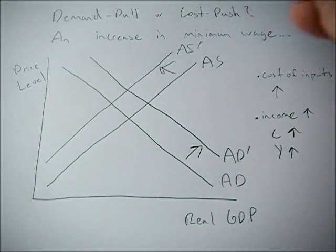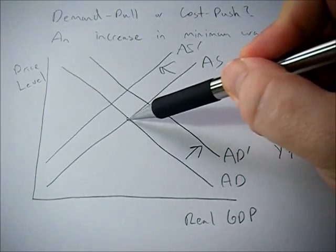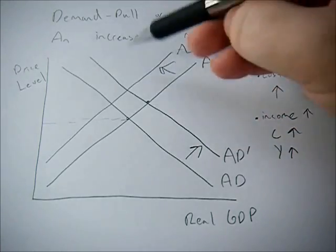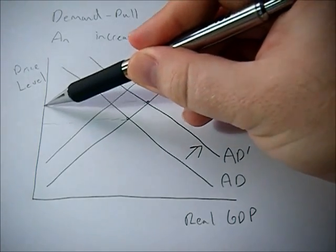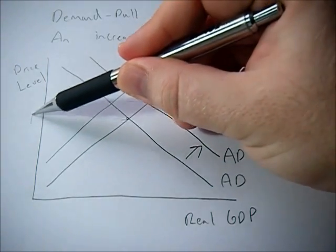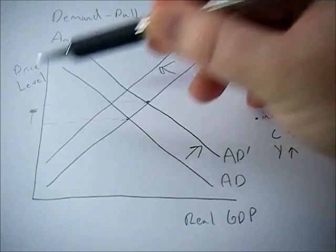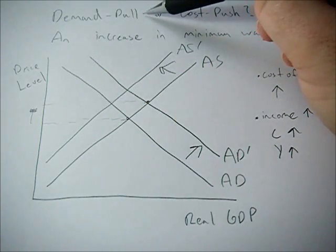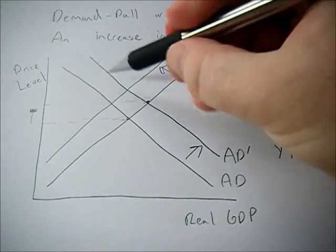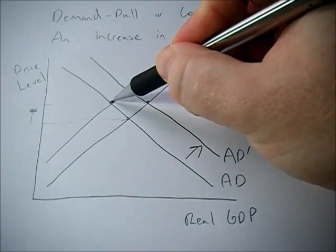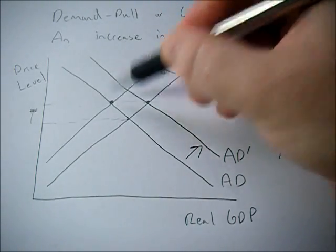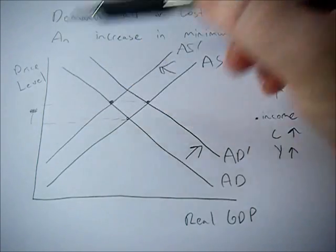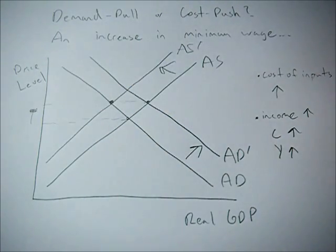So if only aggregate demand increased, this would be our new equilibrium point and this would be our new equilibrium price level — it would go up, and that would be demand-pull inflation. If we only had the aggregate supply curve shift, we would have a new equilibrium point with a higher price level, and that would be cost-push inflation.